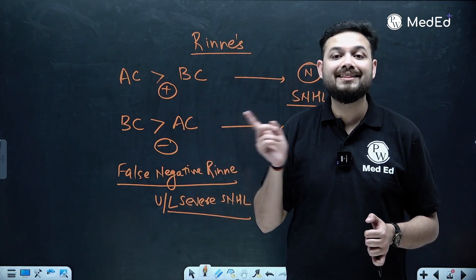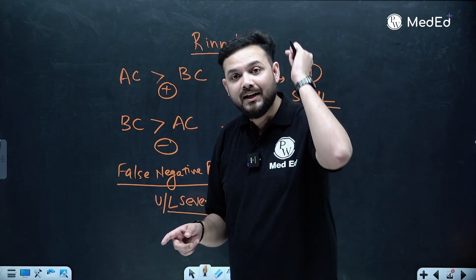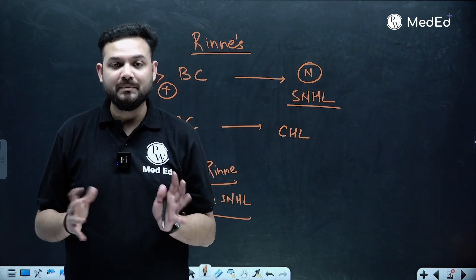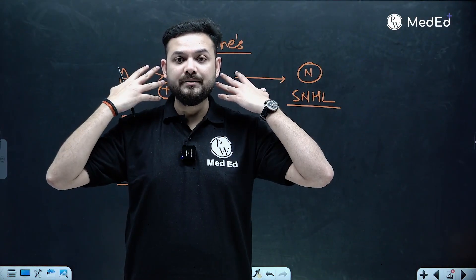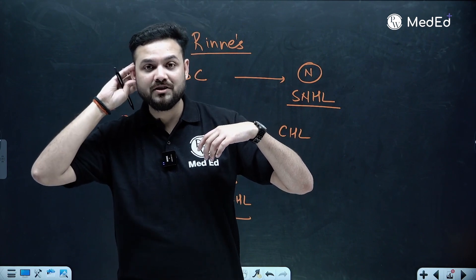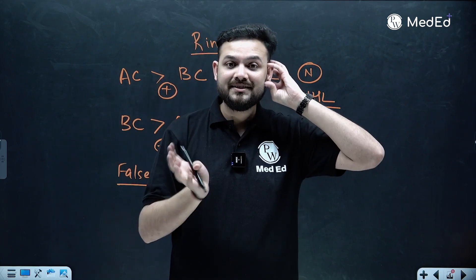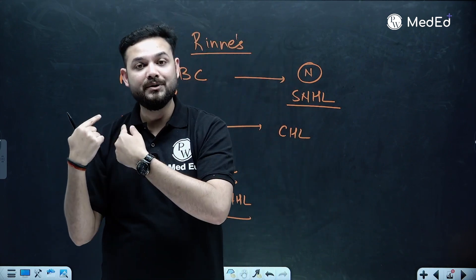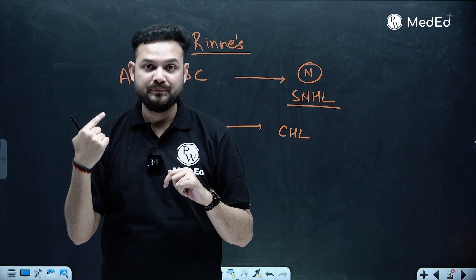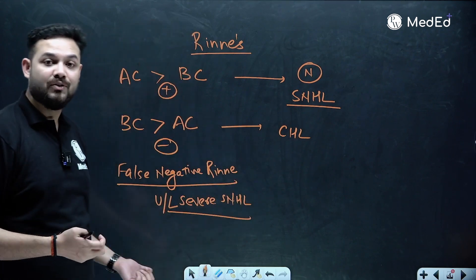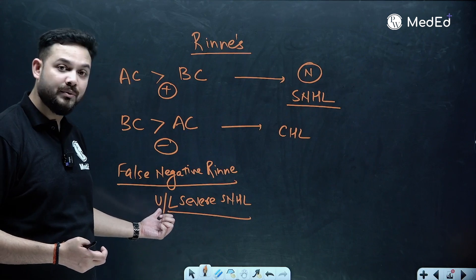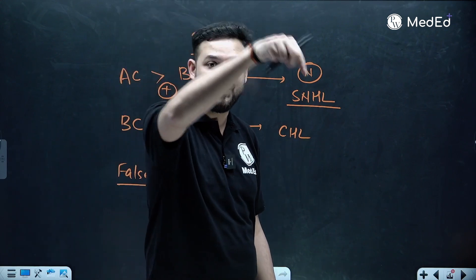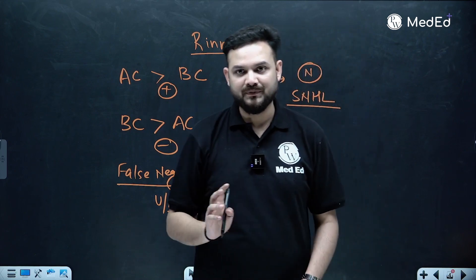The cause of false negative Rinne's is unilateral severe sensorineural hearing loss, and it happens because of the transcranial vibration of the opposite cochlea which helps the test ear to hear. Bone conduction stimulates both sides — the non-test side's vibrations travel transcranially and stimulate the test side cochlea. This is why you get a falsely negative interpretation, and that is why false negative Rinne's is seen in unilateral severe sensorineural hearing loss.